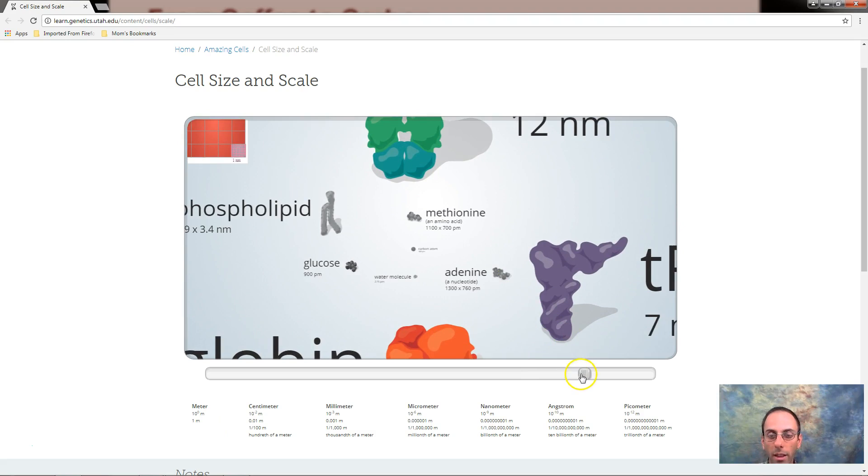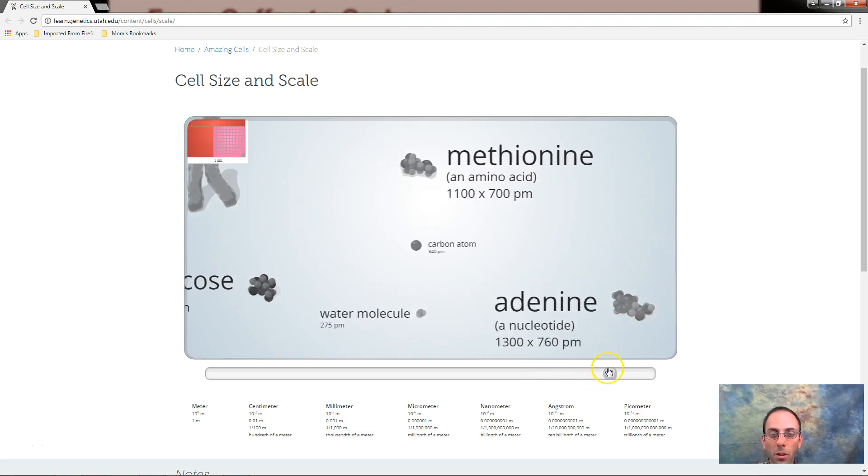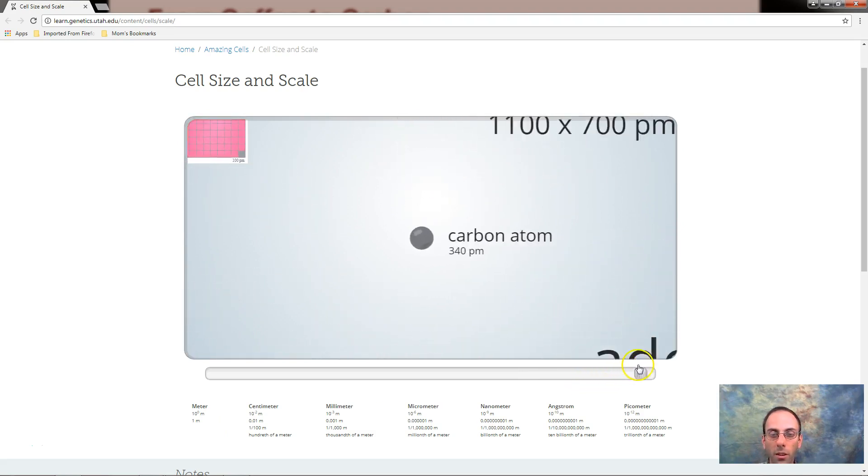Phospholipids. Glucose. Adenine. Should sound familiar. Water molecule. All the way down to a carbon atom. So this is the smallest form.